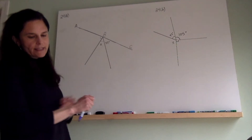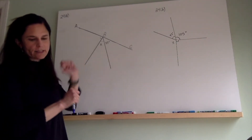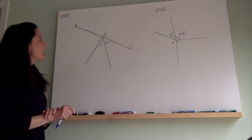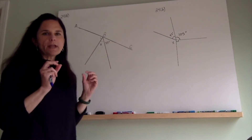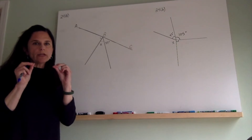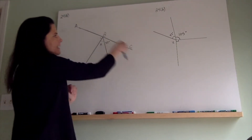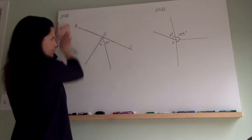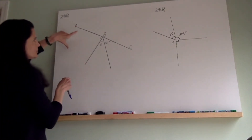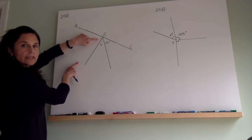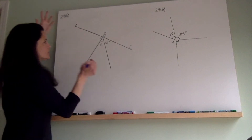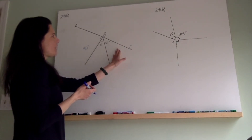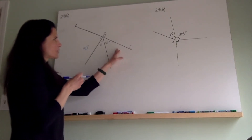Problem 24A says: in each of the following figures, not drawn to scale, find angle X. For problem A, you are given that ABC is a straight line and you are asked to find unknown angle X. We need to think about our angle properties and use what we know to find out what we don't know. Since ABC is a straight line, all of the angles along it add up to 180 degrees. You'll notice it's broken up into three parts: a 90-degree angle indicated by the square in the corner, the unknown angle X, and 37 degrees.